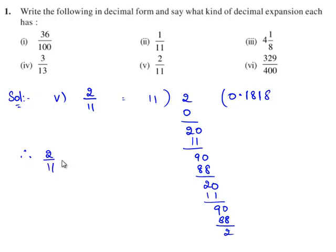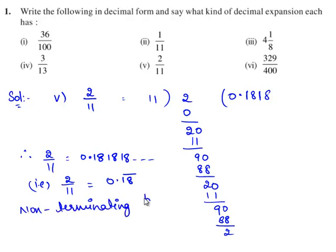Therefore, the decimal expansion for 2/11 is 0.181818 and so on. That is, 2/11 equals 0.18 bar. Here the decimal expansion is non-terminating but repeating.